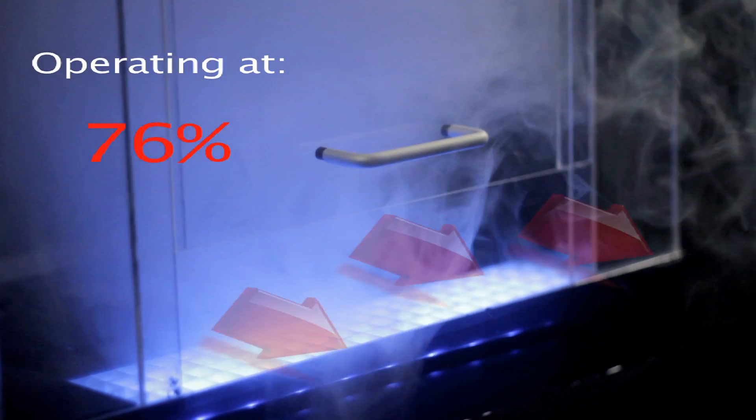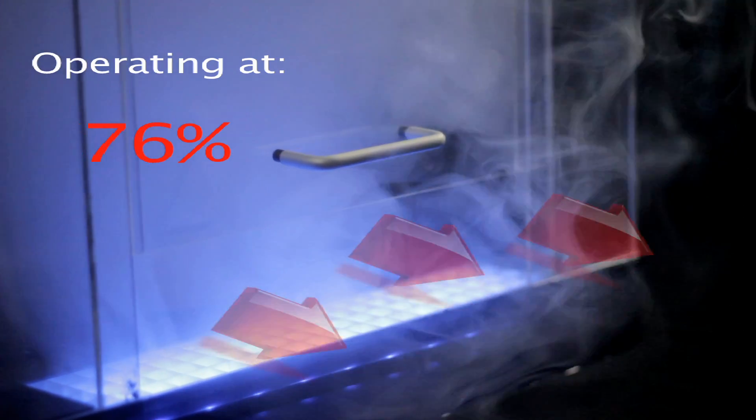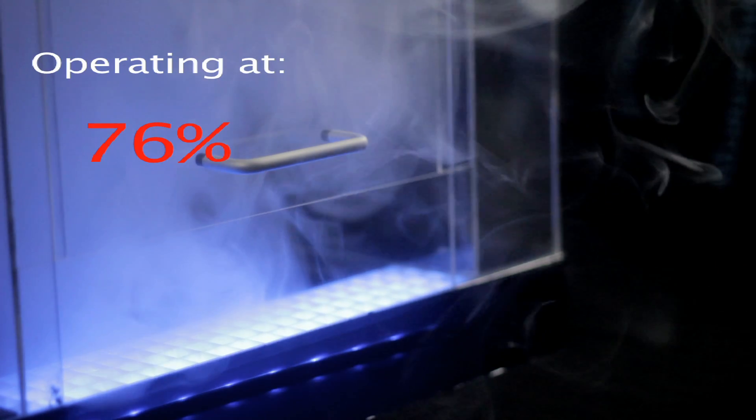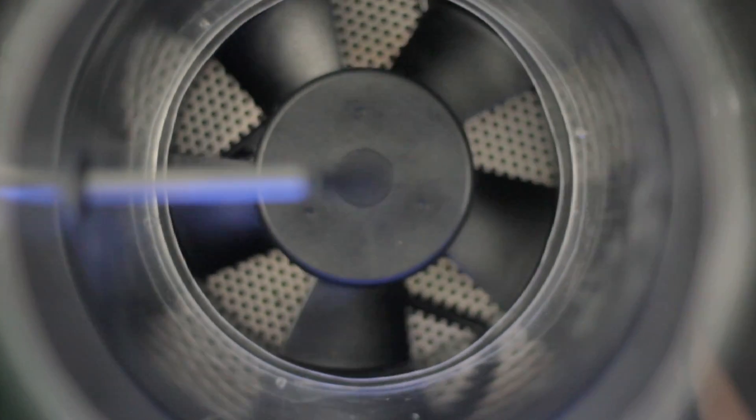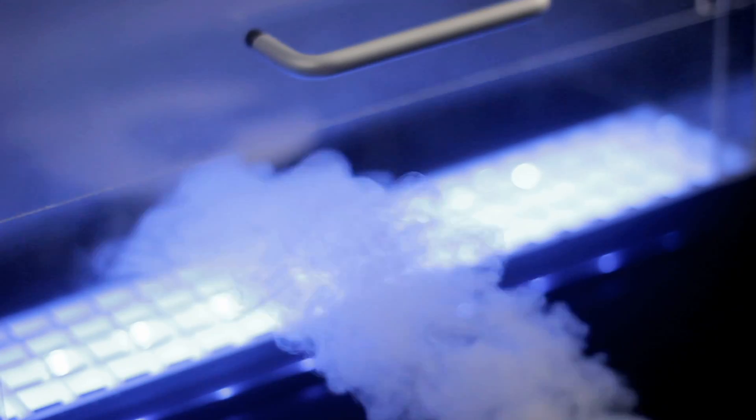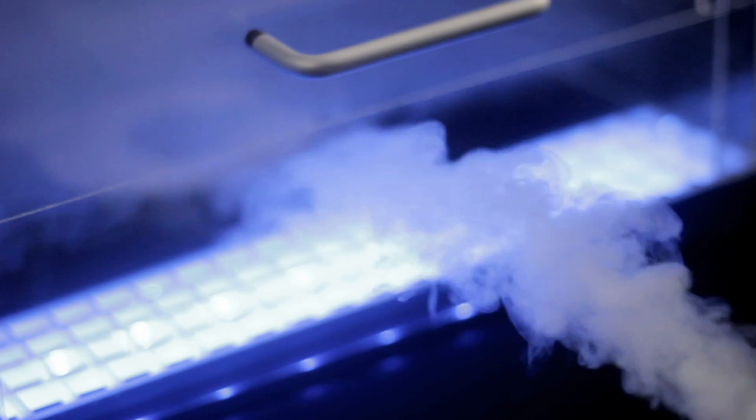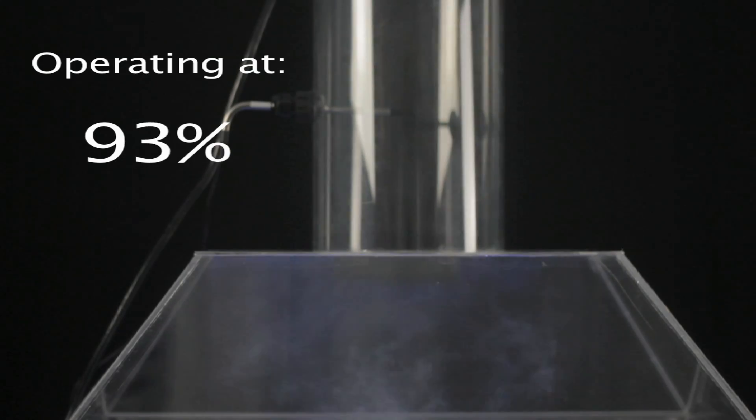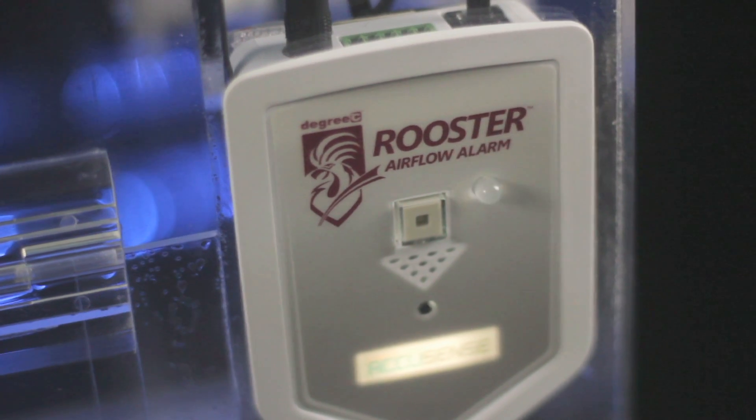When the environment inside the hood is altered in any way, there's a potential for harmful vapors to leak out. Such alterations may be caused by a drop in overhead ventilation or a disruptive airflow in front of the sash. With the Rooster airflow alarm we can ensure that our biosafety cabinet is functioning properly. The alarm goes off when the airflow deviates within 20% of calibrated airflow.